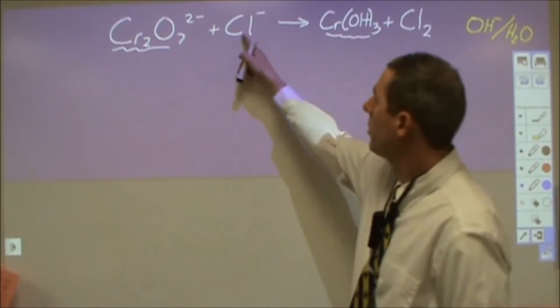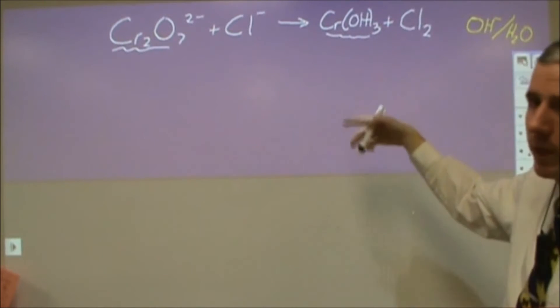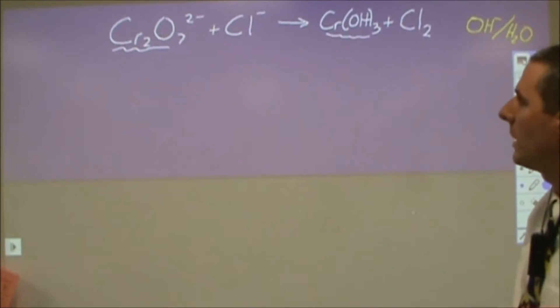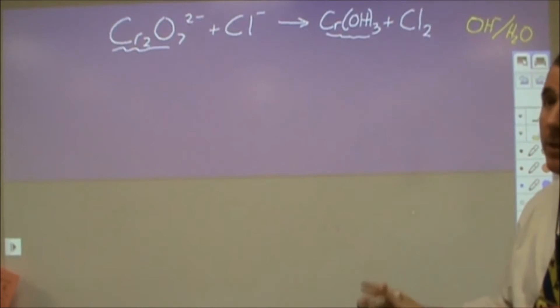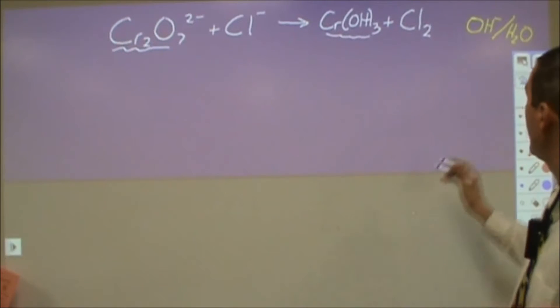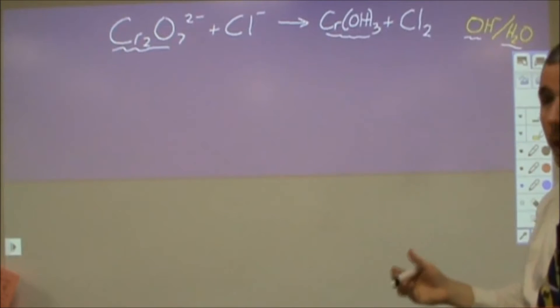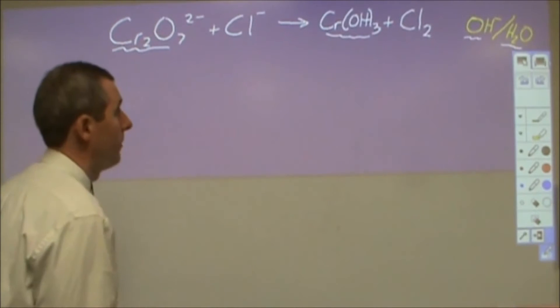Now chloride could be further oxidized from chlorine into hypochlorite, into chlorite, and maybe even perchlorate, depending on the concentrations. Now since we're basic, we have hydroxide ions available and water molecules available to help us balance because those are part of your solution.